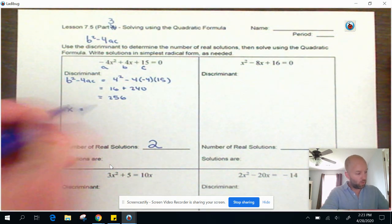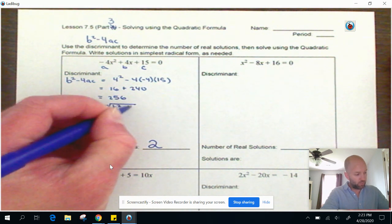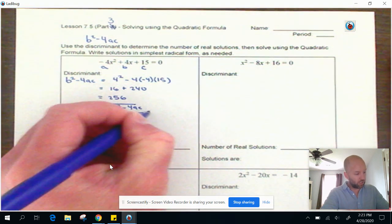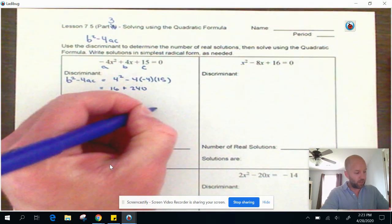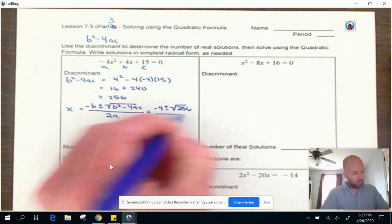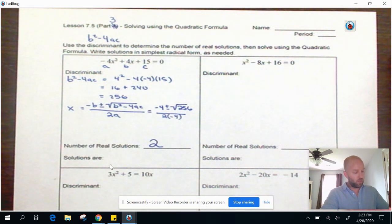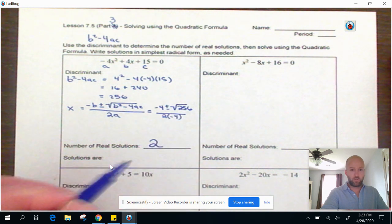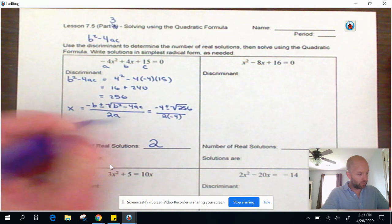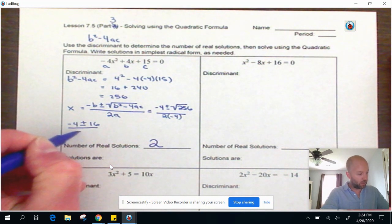Now we're going to go look at what those solutions are. So minus B plus or minus the square root of B squared minus 4AC, all divided by or over 2A. So let's plug these values in. So negative B will be positive. So this is going to be negative 4 plus or minus the square root of 256. That's the discriminant divided by two times A, which is negative 4. So I'm going to rewrite this thing with the square root of 256 taken and this simplified. So negative 4 plus or minus 16 is the square root of 256, all divided by negative 8.